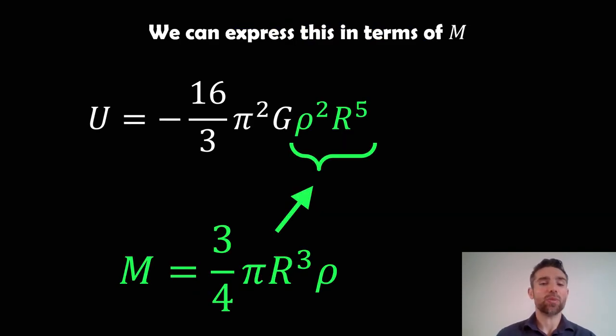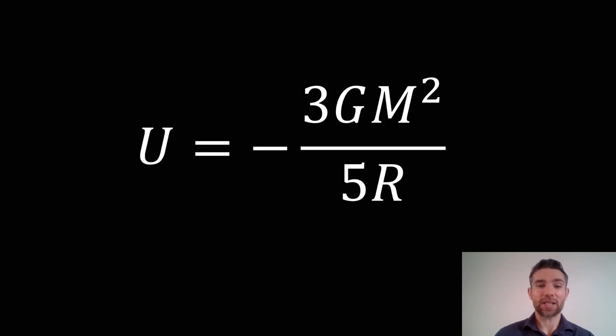What we want is to remove the density and put it in terms of the mass instead. At the bottom, that equation for mass is the mass of a sphere in terms of its radius and density. If we rearrange that for density ρ and for R, we can substitute those back into the above equation. That will allow us to remove the density.